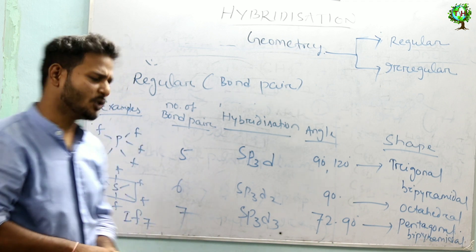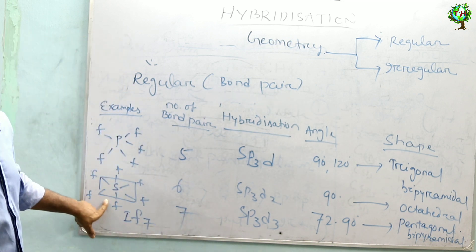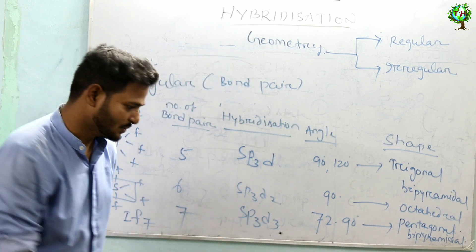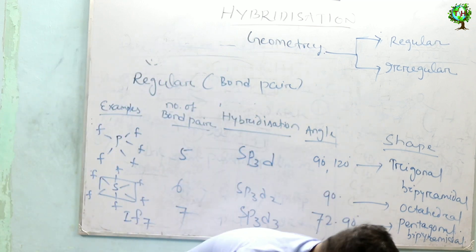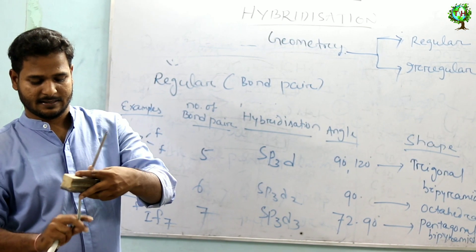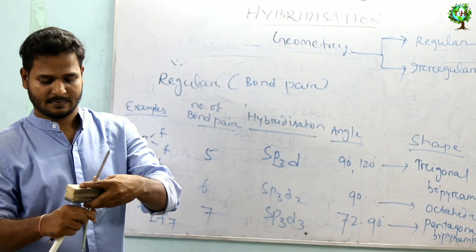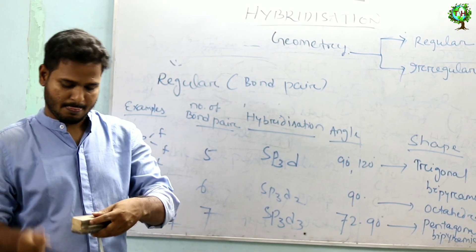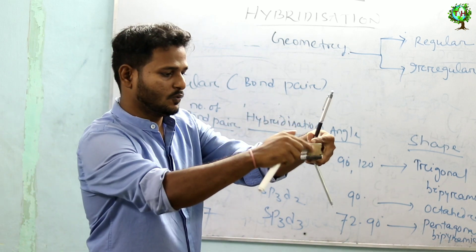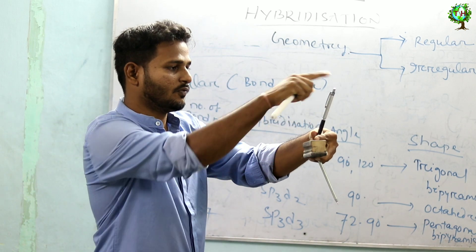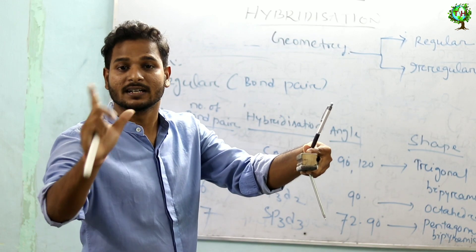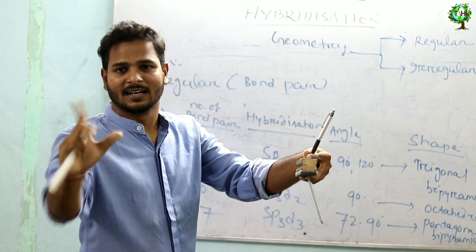When there are six bond pairs — for example SF6 — the hybridization is SP3D2. The six orbitals are arranged, and all bond angles are 90 degrees. The shape is octahedral.